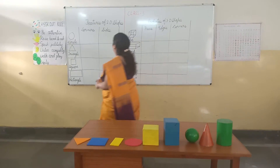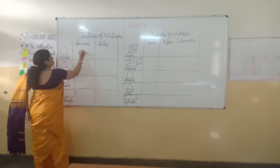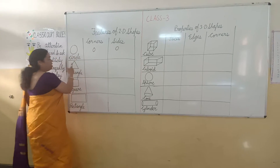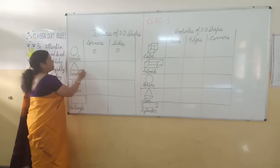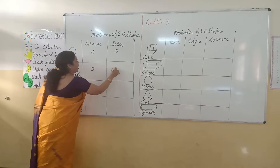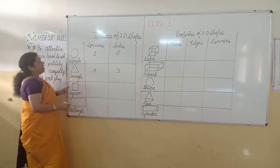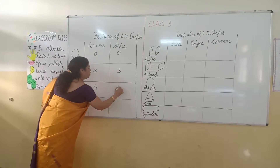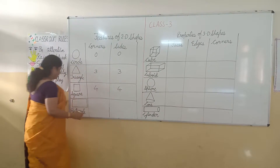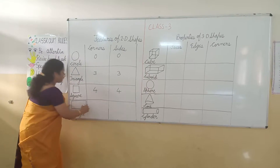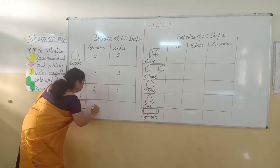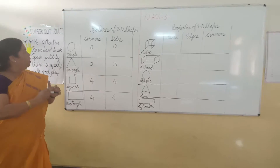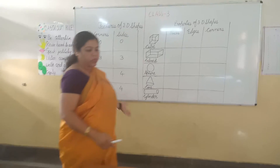So, you have learnt: circle has 0 corners and 0 sides; triangle has 3 corners and 3 sides; square has 4 corners and 4 sides; rectangle has 4 corners and 4 sides.